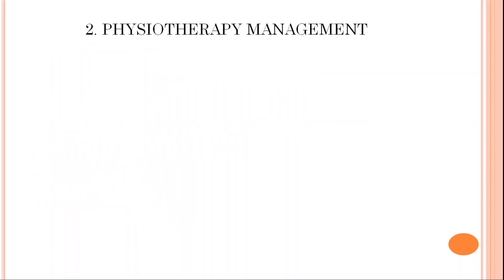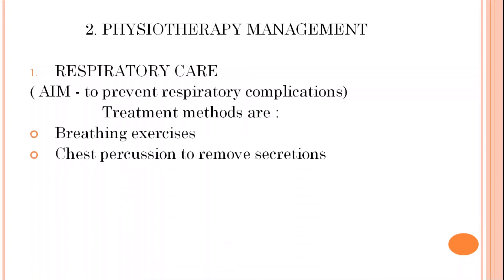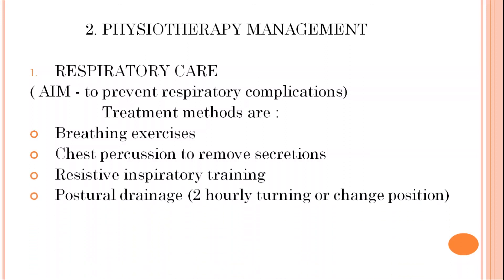Physiotherapy management includes several points. In GBS, the person's muscles become weak, so due to the weakness sometimes flaccid paralysis also occurs, and the patient is bed-ridden, giving chances of respiratory complications. The main aim of respiratory care is to prevent respiratory complications. Treatment methods are breathing exercises, chest percussion to remove secretions, resistive inspiratory training, postural drainage, and early turning or change of position.